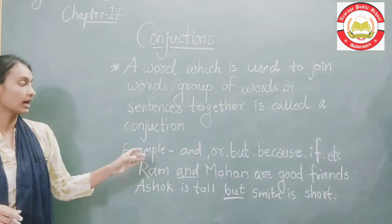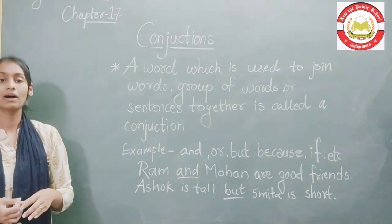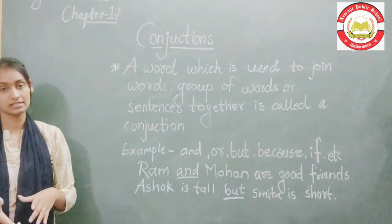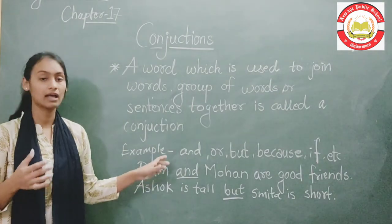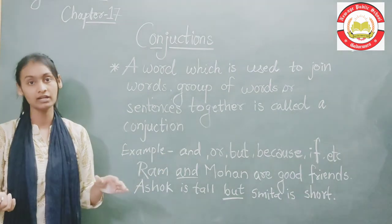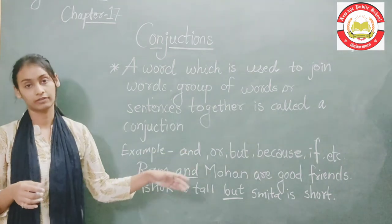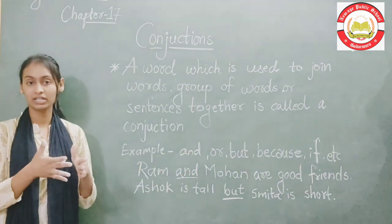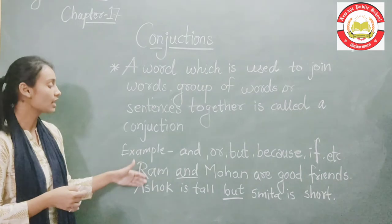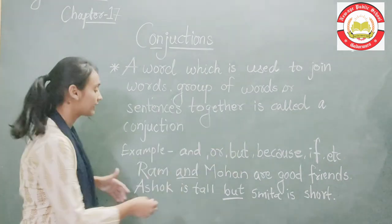Ram and Mohan are your friends. If you understand the sentence — Ram is a good friend and Mohan is my good friend — so what we mean is we merge them: Ram and Mohan are your friends. This is how 'and' joins two groups of words.